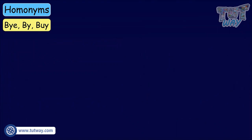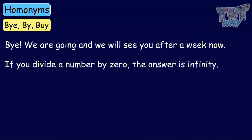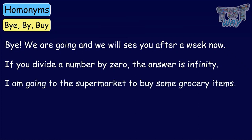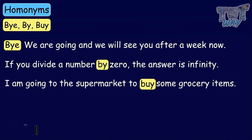Here we have three words that sound similar: bye, by, and buy. All three have different meanings. Bye — we are going and will see you after a week. If you divide a number by zero, the answer is infinity. I am going to the supermarket to buy some grocery items. So you can notice that three words spoken similarly have different meanings.